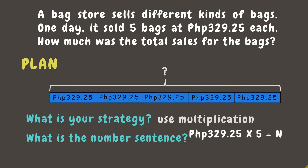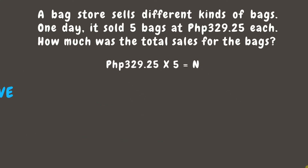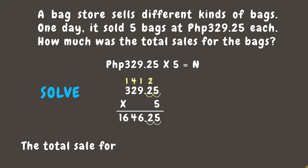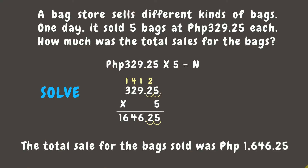Step 3: Solve. Let's multiply 329.25 by 5. 5 times 5 is 25 — write 5 and carry 2. 5 times 2 is 10, plus 2 is 12 — write 2 and carry 1. 5 times 9 is 45, plus 1 is 46 — write 6 and carry 4. 5 times 2 is 10, plus 4 is 14 — write 4 and carry 1. 5 times 3 is 15, plus 1 is 16. Place the decimal point. Therefore, the total sale for the bags was 1,646 pesos and 25 centavos.